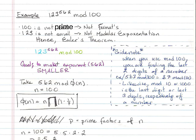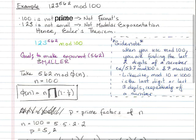So I have rewritten the problem with colors. And note that the goal of Euler's theorem is to make the exponent, 562, smaller. If the exponent is smaller, we're making our problem easier to deal with.